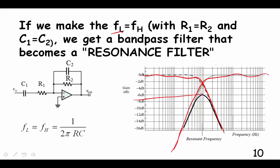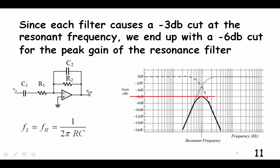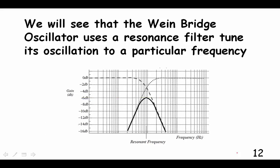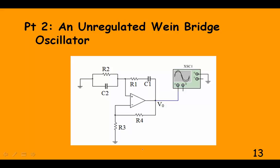The resonant curve starts low frequency, comes up to resonant frequency, and then goes down again for higher frequency. A wine bridge oscillator uses a resonance filter to pick its resonant frequency that it's going to oscillate at.